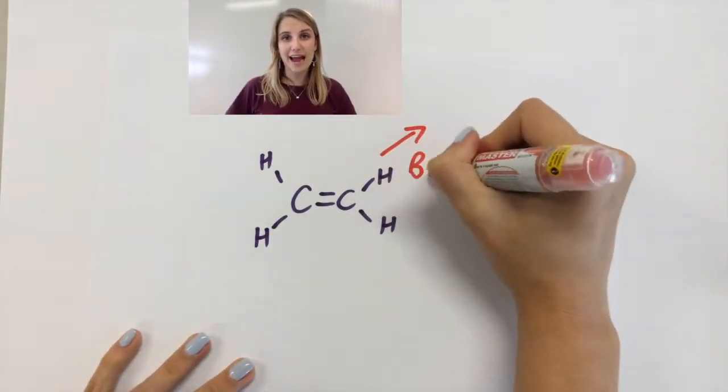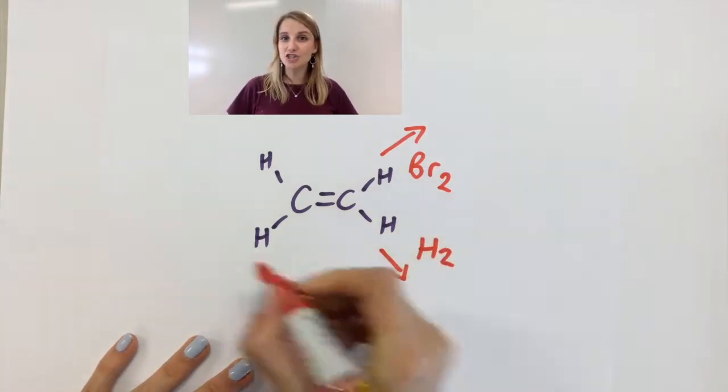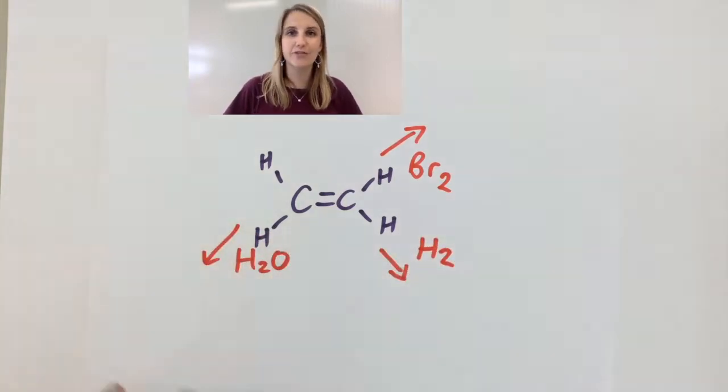So ethene can react with bromine, which is Br2, hydrogen, which is H2, or water in the form of steam, which is H2O. In all of these reactions they all kind of work in the same way in that the double bond in your alkene breaks open and the two things add on either side.